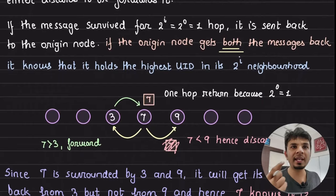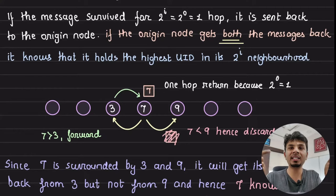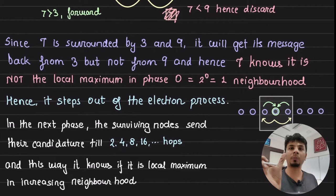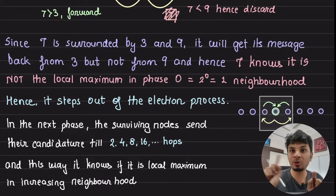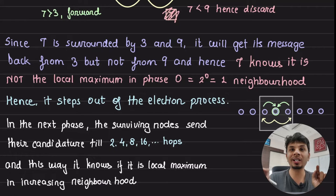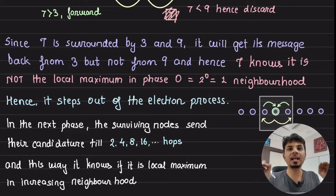We are constantly increasing the neighborhood size to verify whether we are still the maximum. If a node receives the message back from both sides, it confirms it is still the local maxima in that neighborhood. If for some intermediate node the incoming UID is less than its own, it discards the message, meaning the originating node won't receive a reply from that direction.